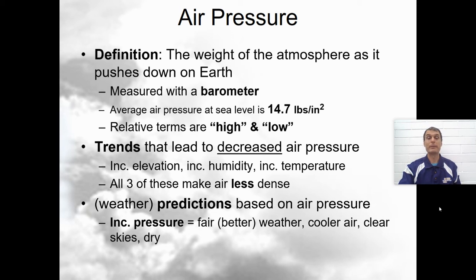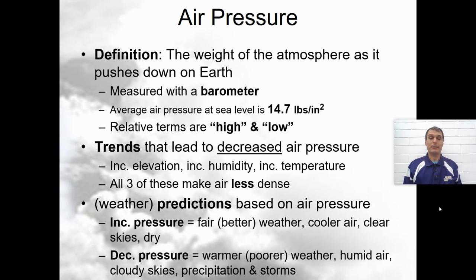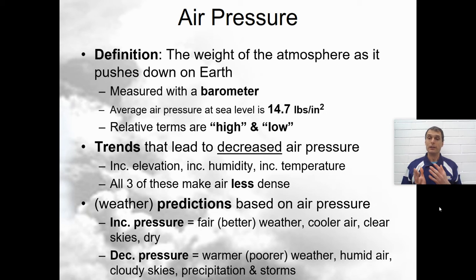If you ever look at a weather map, that's the H's on the weather map — you want an H over where you live unless you like rain. Decreasing pressure, or low pressure, means you're going to have warmer, poorer weather — humid air, cloudy skies, precipitation, and storms. So in other words, high pressure is good weather and low pressure is bad weather.